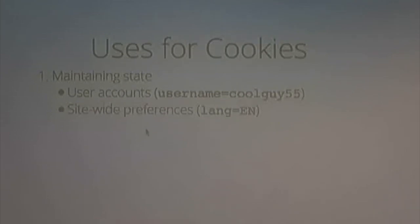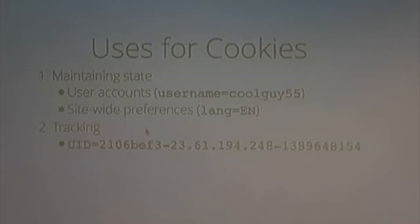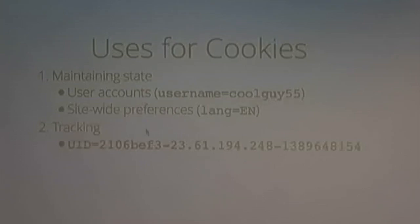You can turn off cookies in your browser if you want. They're also occasionally used for site-wide preferences, like setting a language. But they can also be used for tracking — anything that lets you set persistent state in the browser will let you do this. Tracking cookies often look like a long, high-entropy string — it just looks like gibberish to most people. So cookies have valid uses, but they can also be used for tracking.